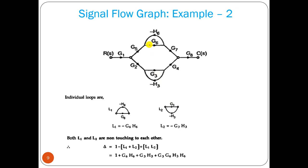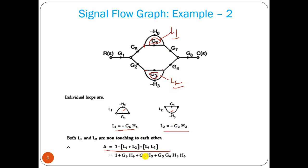Now what are the loops? We have two loops — loop 1 and loop 2 — and no other feedback paths. These two loops are non-touching with each other because their nodes are not common. So delta = 1 minus individual loop gains plus the product of the two non-touching loop gains. We multiply the two non-touching loop gains together to get that additional term.